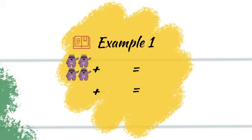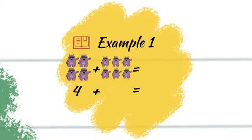let's count as a class. 1, 2, 3, 4. 4 is correct. Let's count our next set of monsters. 1, 2, 3, 4, 5, 6. 6 monsters.